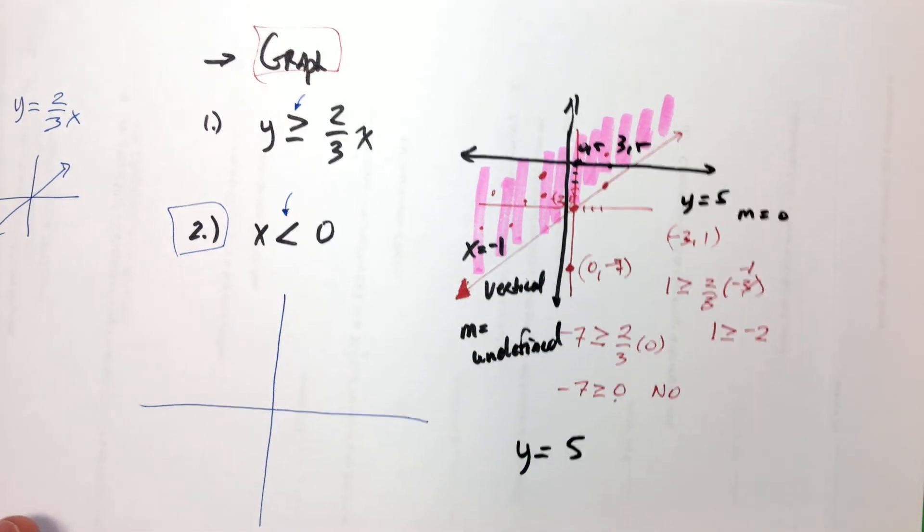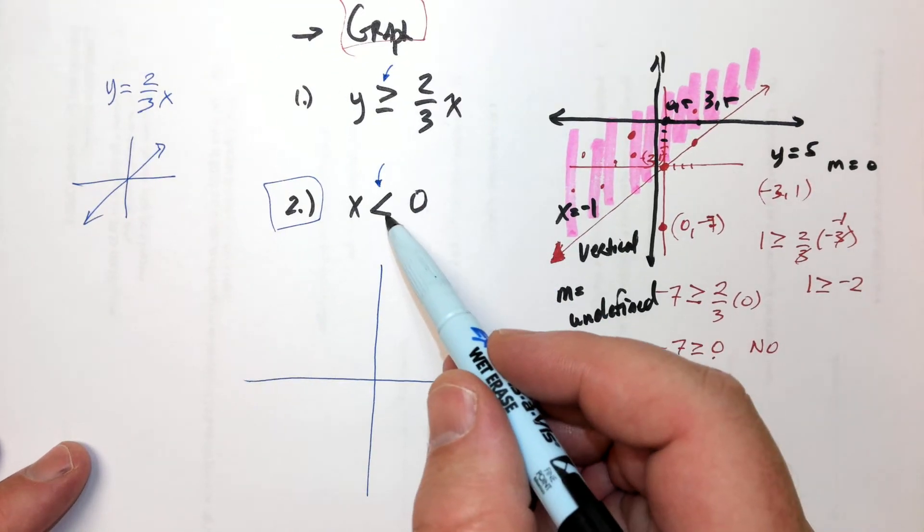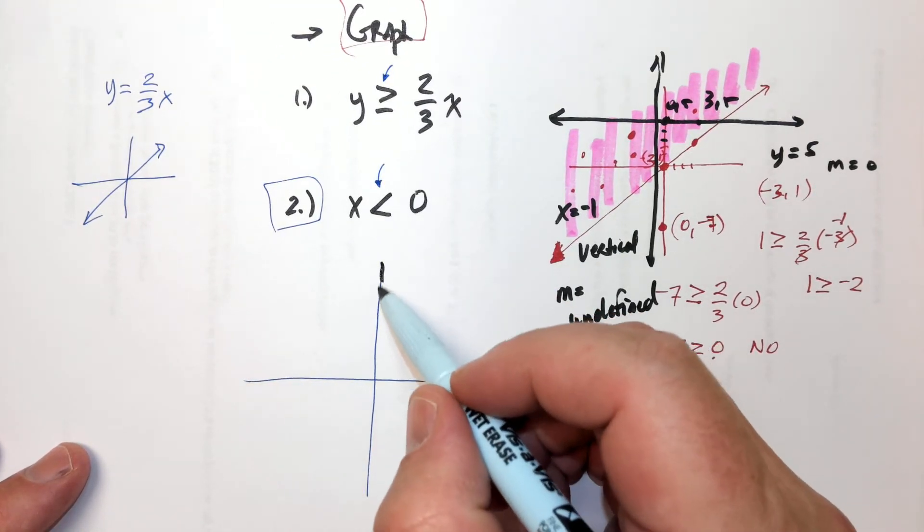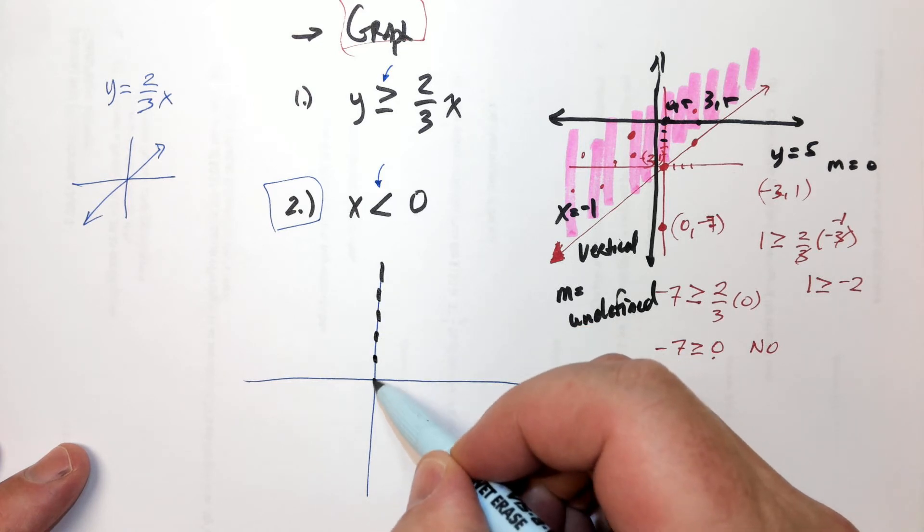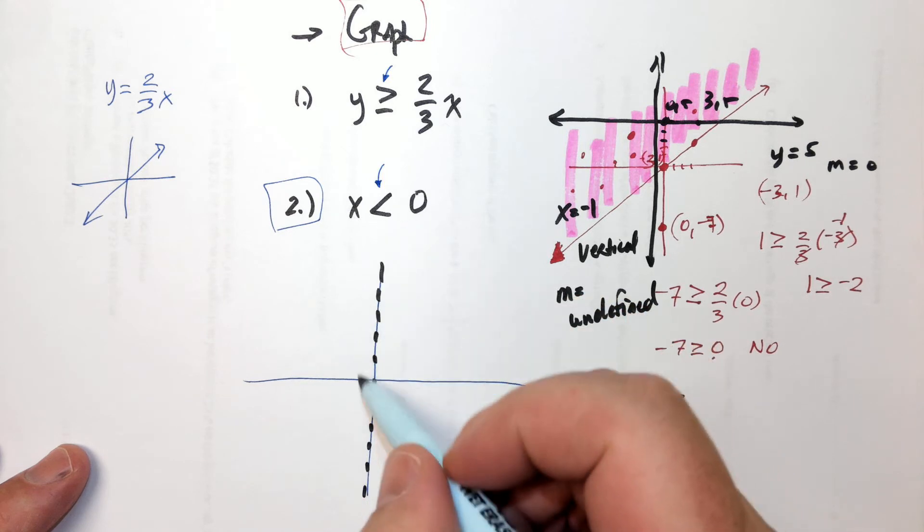Awesome. But, well, hold on. Hold on. It's going to be a dotted line, right? And it says it's less than. X is smaller than zero. So, like, here x is equal to one.